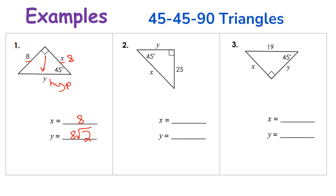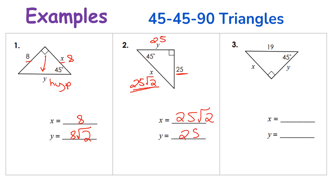Let's take a look at number two. I have 25 here, so my other leg would also be 25. My hypotenuse is my leg times the square root of two. My leg is 25, so my hypotenuse would be 25 times the square root of two. So x would be 25 square root of two, and y would be 25.